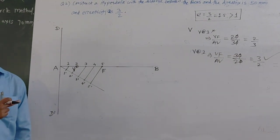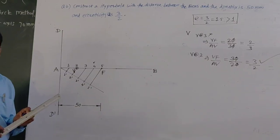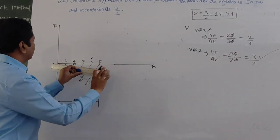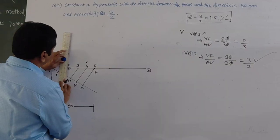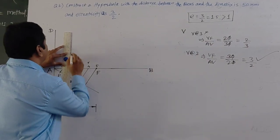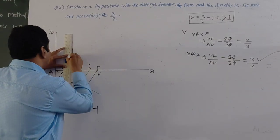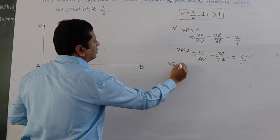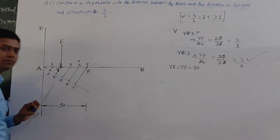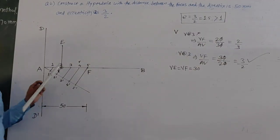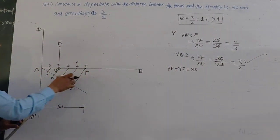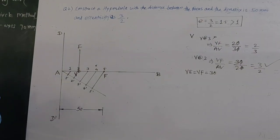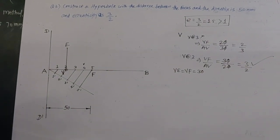After locating vertex V, you have to draw one line perpendicular to AB at V, such that this perpendicular length VB equals VF. In our case, VF is 30mm, so draw VB perpendicular to AB with length equal to 30mm.